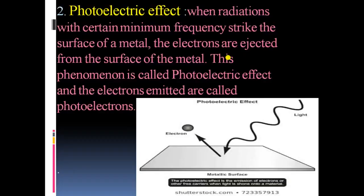Next topic is the Photoelectric Effect. When radiations with a certain minimum frequency strike the surface of a metal, electrons are ejected from the surface of the metal. This phenomenon is known as the photoelectric effect and the electrons emitted are called photoelectrons. When light falls on the metal plate, electrons absorb energy and get emitted from the surface of the metal.